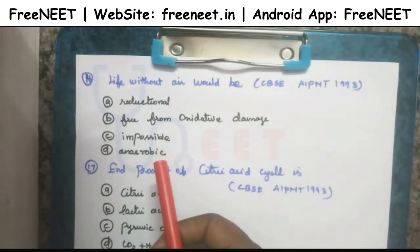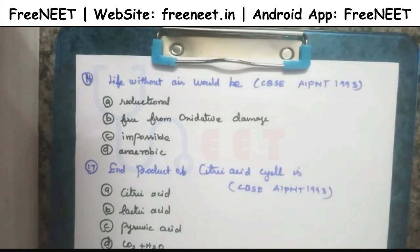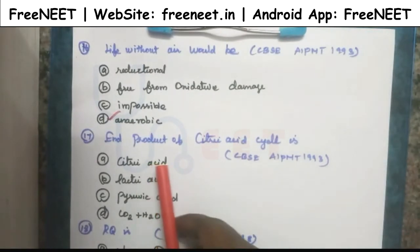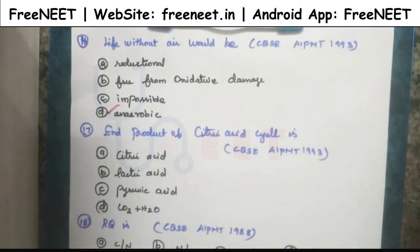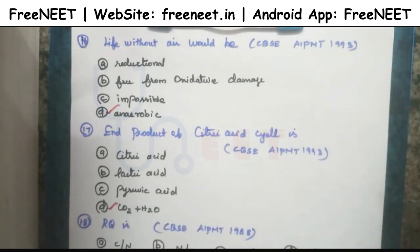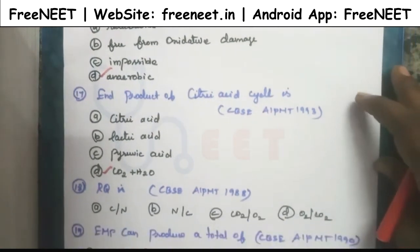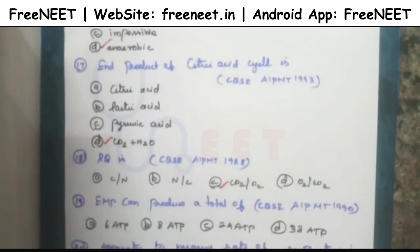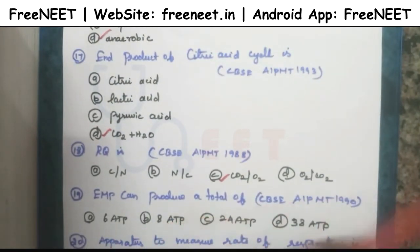Fermentation is an anaerobic reaction — it is not an oxidative reaction, it is an anaerobic reaction. Another name for fermentation is anaerobic reaction. The end product of the citric acid cycle is carbon dioxide and H2O — glucose and acetyl coenzyme A are converted into CO2 and water. The respiratory quotient (RQ) is the ratio of carbon dioxide to oxygen. EMP, which is glycolysis, produces a total of 8 ATP during the glycolysis process.